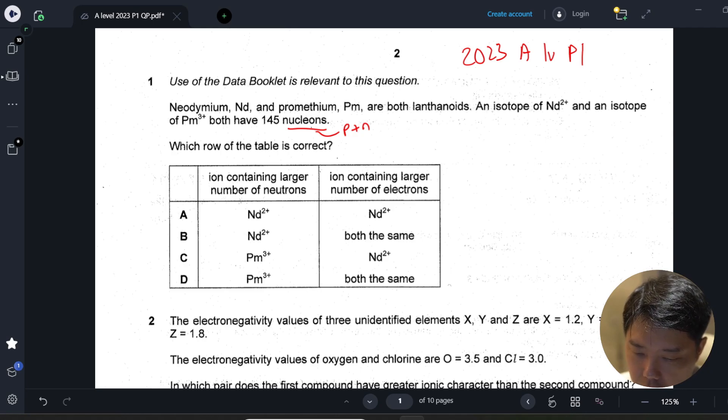Ion containing larger number of neutrons - if you look up the periodic table, neodymium will have 60 protons, which means that if the nucleon number is 145, it should have 85 neutrons.